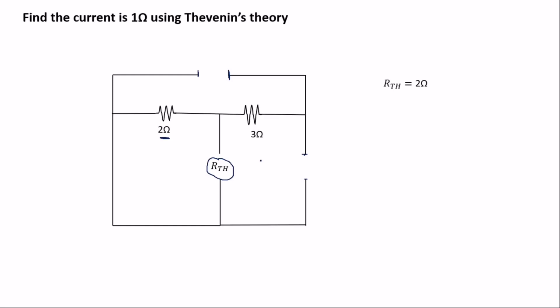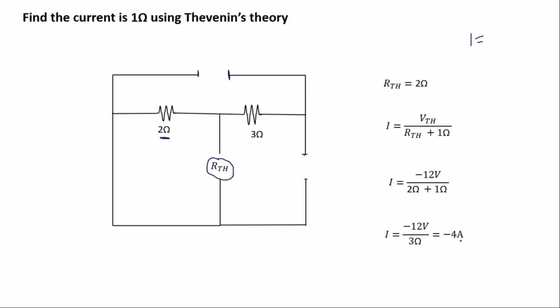Now the formula for finding the current is: I = Thevenin voltage divided by (Thevenin resistance plus the resistor in which you are finding the current). This gives us negative 12 volts divided by (2 ohms plus 1 ohm), which equals negative 4 amps. The negative sign simply indicates the direction of the current. Thank you very much for watching — please subscribe for more videos.